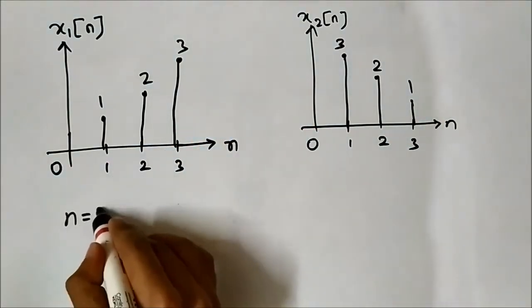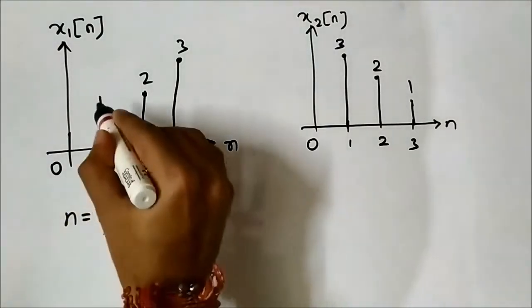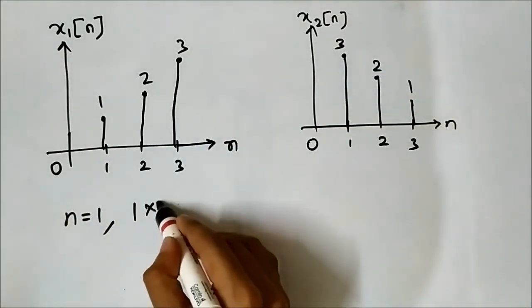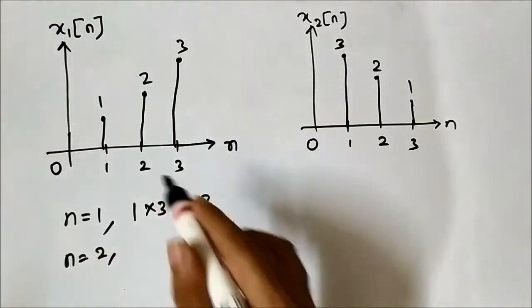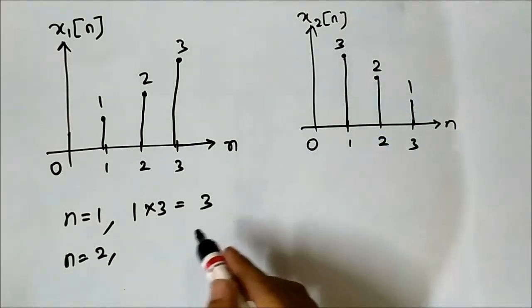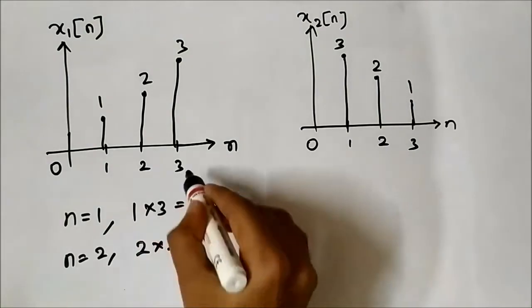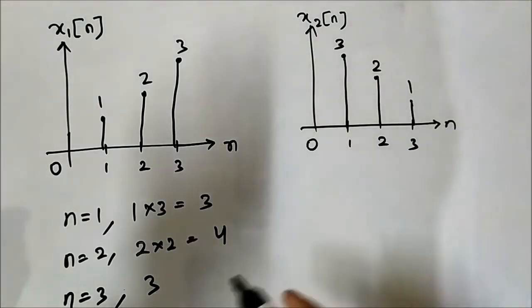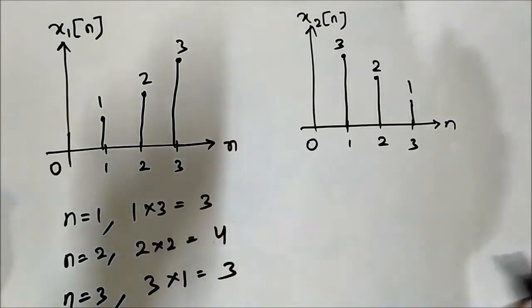So at n equals 1, here the amplitude value is 1, here it is 3, so 1 times 3 equals 3. At n equals 2, the amplitude value is 2, here is also 2, so 2 into 2 equals 4. At n equals 3, the amplitude value in case of x1[n] is 3, here it is 1, so 3 into 1 equals 3.